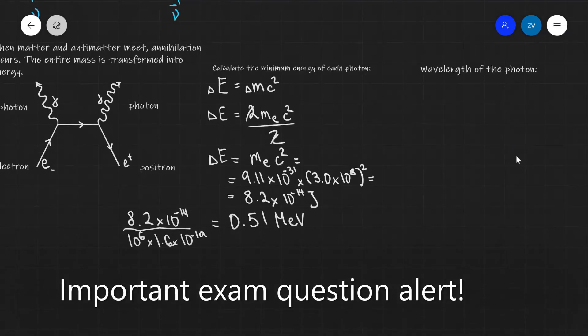We could take this a step further and calculate the wavelength of the photon that we are expecting to come out of this annihilation event or the frequency. Let's do the wavelength. Remember the energy of a photon is given by the following equation: E is equal to hc over lambda. Rearranging for the wavelength lambda, we're going to get that this will be equal to hc divided by the energy, which is equal to 6.63 times 10 to the power of minus 34 times the speed of light, which is 3.0 times 10 to